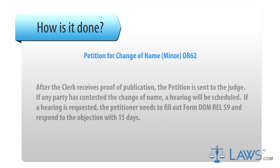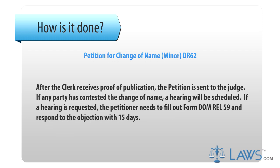Step 7. After the clerk receives proof of publication, the petition is sent to the judge. If any party has contested the change of name, a hearing will be scheduled. If a hearing is requested, the petitioner needs to fill out form DOMREL 59 and respond to the objection within 15 days.